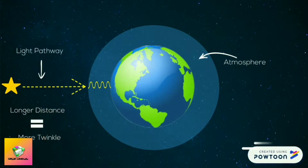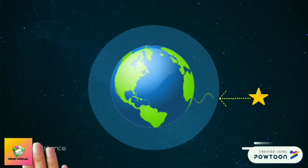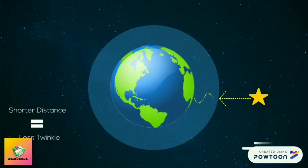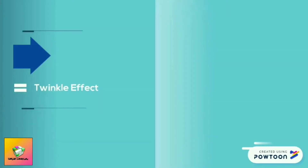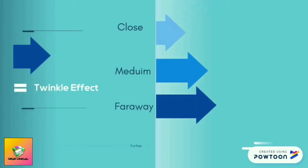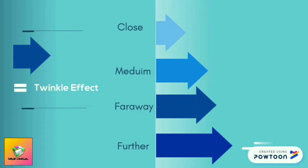In conclusion, the science behind what creates a twinkle is all the interferences affecting the wavelength of the starlight that enters the atmosphere. The more interferences, the more twinkle we will get, and vice versa. This graph shows that the further away the light is coming from, the stronger the twinkle effect that will take place.